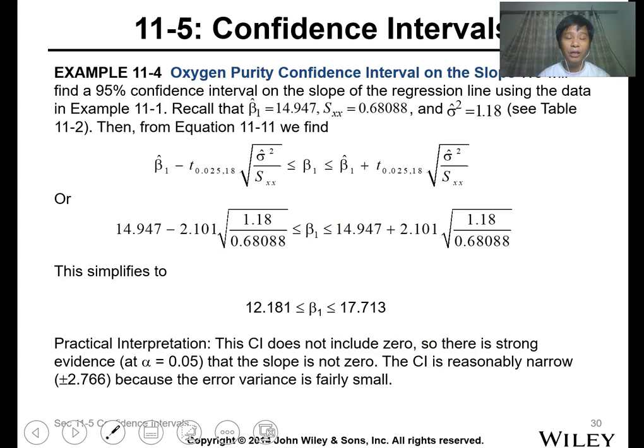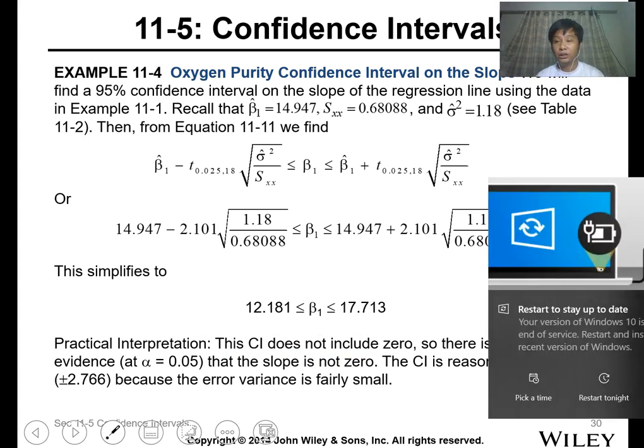What is the interpretation? This confidence interval does not include zero, so there is strong evidence that the slope is not zero. The confidence interval is reasonably narrow because the error variance is fairly small. If there's a zero value here, it means your regression model is not okay.